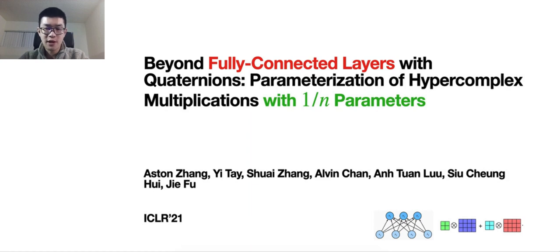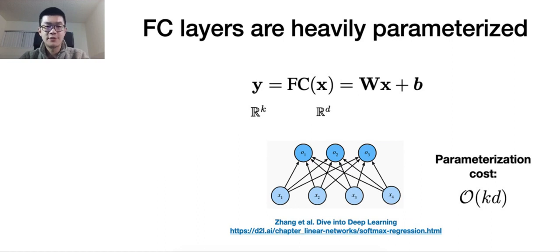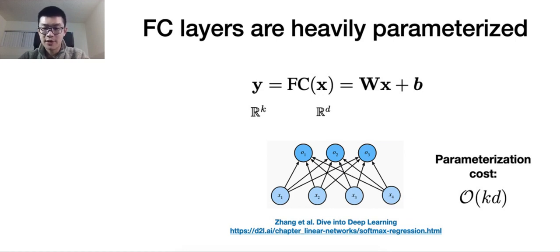With Quaternions: parameterization of hyper-complex multiplications with one-over-n parameters. As we know, fully-connected layers, also known as FC layers, are pervasive. Such layers transform an input vector of dimension D into another output vector of dimension K. FC layers are fully connected, and the parameterization cost of such layers is dominated by the weight matrix, which is a D-by-K matrix. That's why the parameterization cost is on the order of the product of K and D.